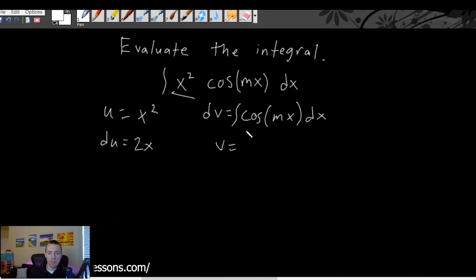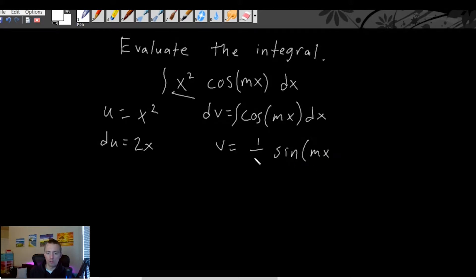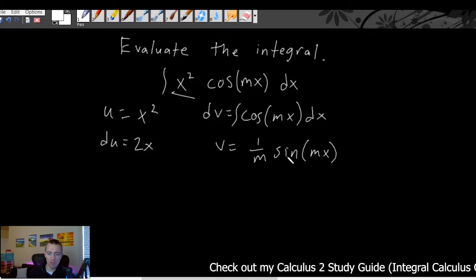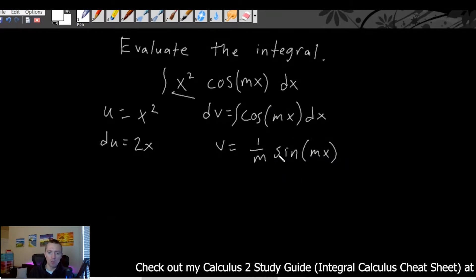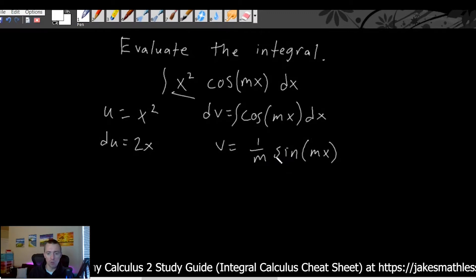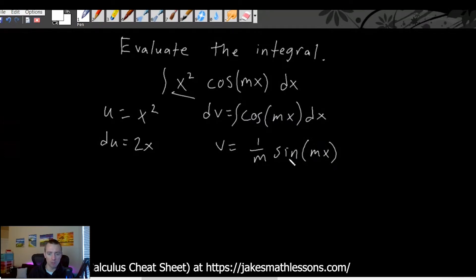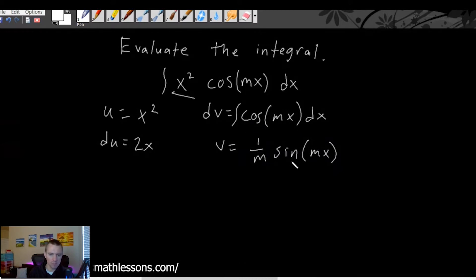The integral of cosine of mx dx is sine of mx times one over m. We can check this by taking the derivative of one over m times sine of mx using the chain rule: the derivative of sine is cosine, and by chain rule we multiply by the derivative of mx, which is m. Multiplying by m cancels with the one over m, getting us back to cosine of mx. And du equals 2x dx.